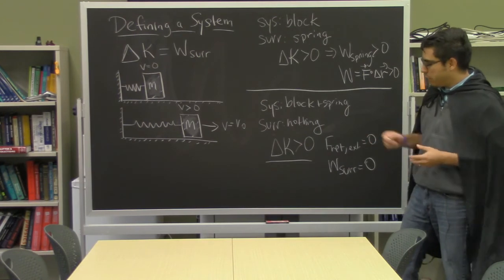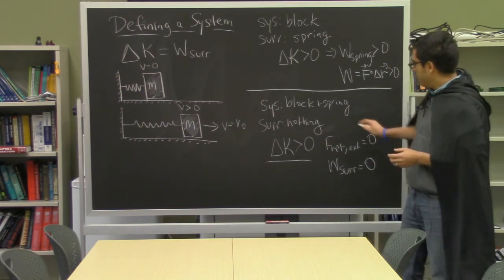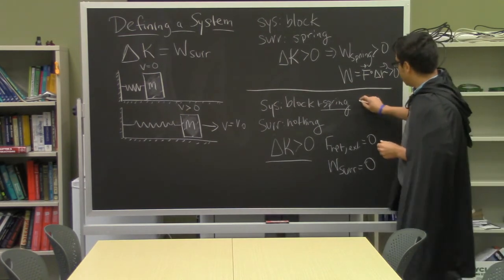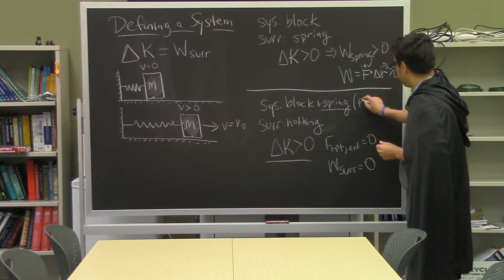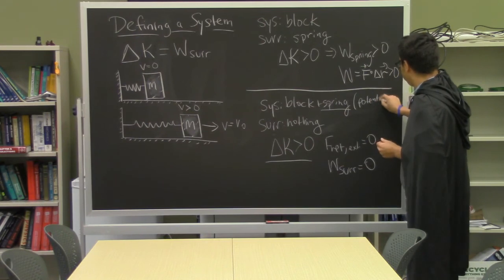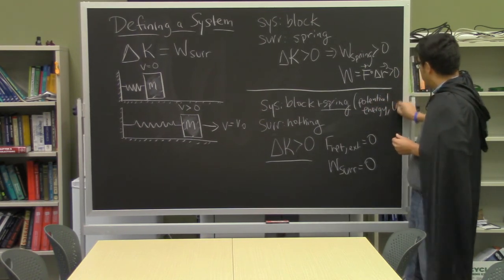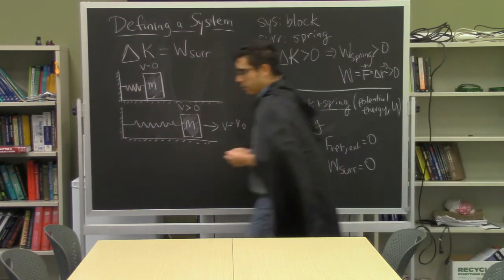So this puzzle is actually resolved by thinking about the spring as being internal to the system and assigning it a thing that we call potential energy, which we'll label with the U.